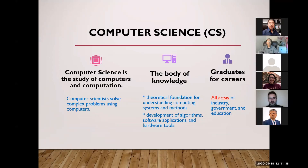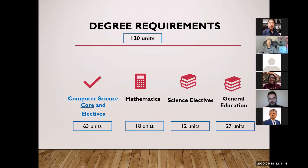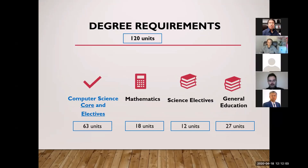To finish the degree in computer science, it requires 120 units of coursework. Those 120 units consist of several categories: general education at 27 units, science electives at 12 units, math at 18 units, and the remaining 63 units — more than half — will be computer science. CS courses are further divided into core and electives.